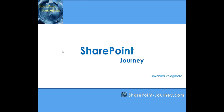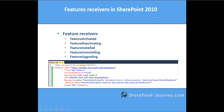Welcome to the SharePoint journey. This is Devendra Velikanla. In this lesson we will learn about what feature receivers are and the types of feature receivers which are available. We have seen how to develop features in one of the previous lessons. A feature receiver helps you to execute some code when you activate a feature, or if you want to perform some action while deactivating the feature through code or the object model.